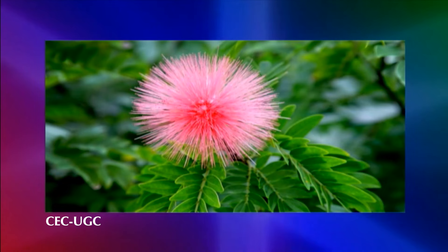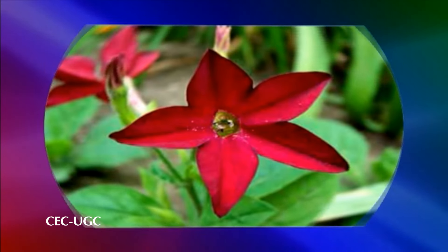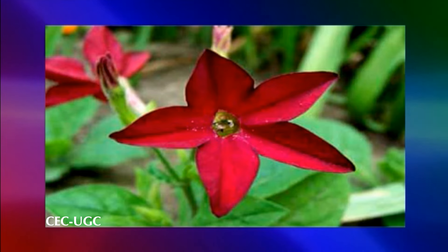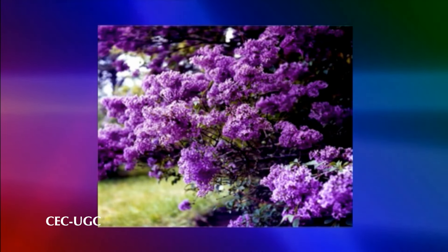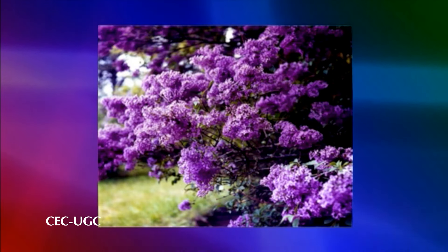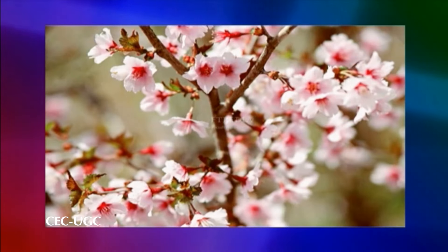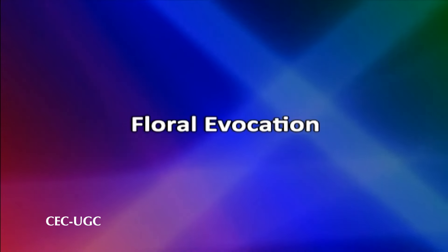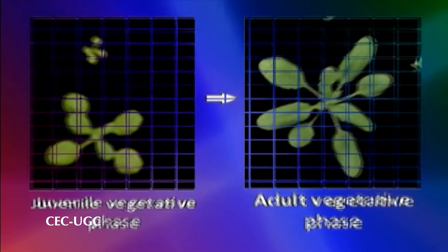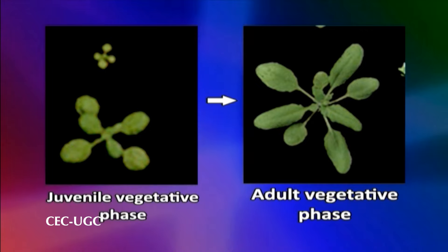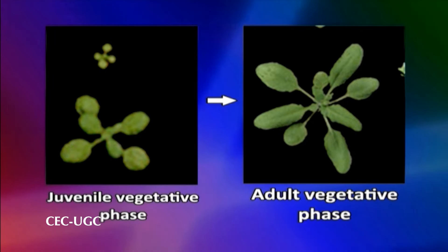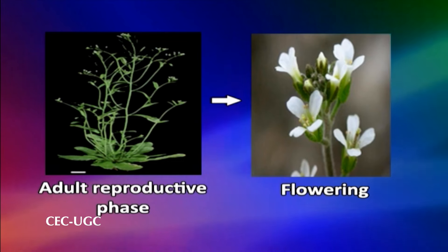The most colourful and spectacular aspect of plant growth is associated with the development of flowers and fruits. It marks a change from vegetative to reproductive growth in angiosperms. The process of flowering requires the vegetative meristem to change into a reproductive meristem. This process, termed floral evocation, involves a sequence of events that includes transition from juvenile vegetative phase to adult vegetative phase, adult reproductive phase, and finally flowering.